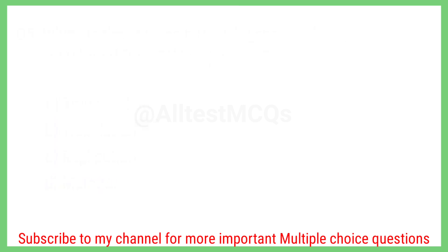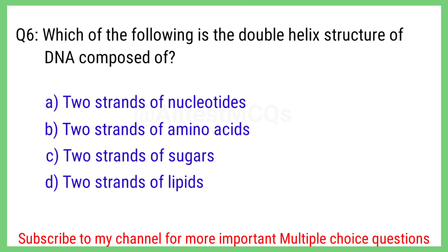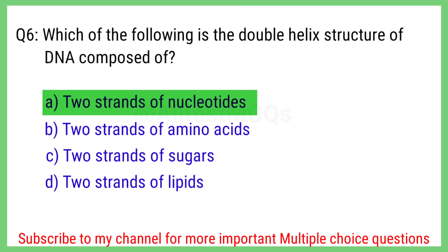Question number 6. Which of the following is the double helix structure of DNA composed of? The right answer is option A. Two strands of nucleotides.